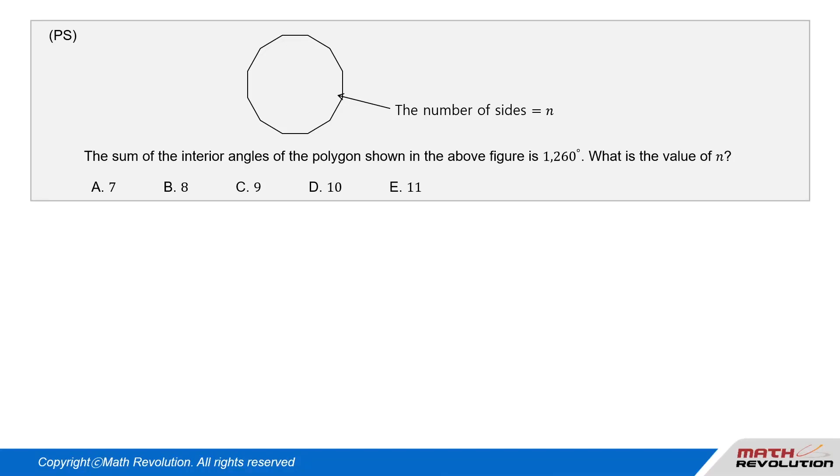Question P.S. The sum of the interior angles of the polygon shown in the above figure is 1260 degrees. What is the value of N?